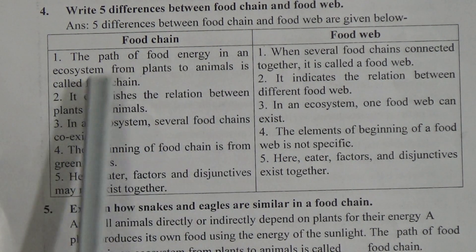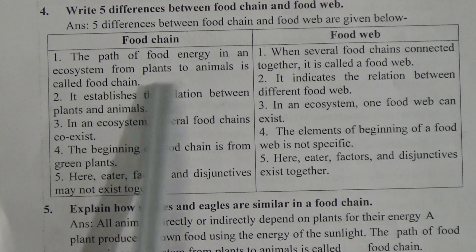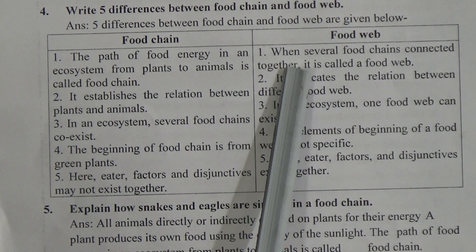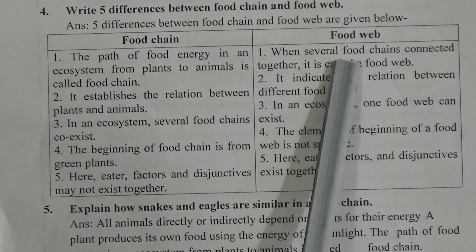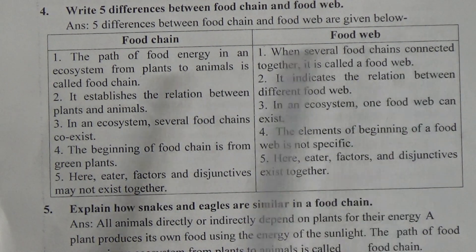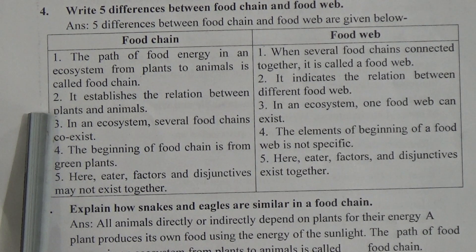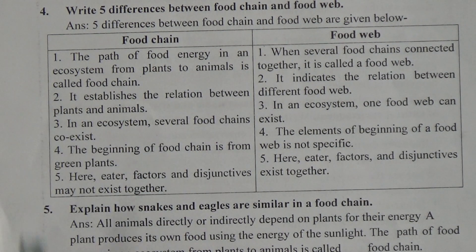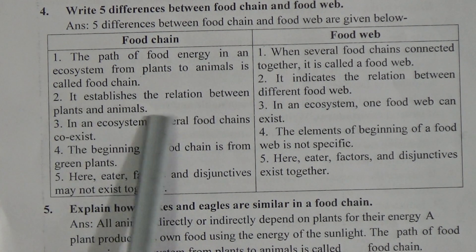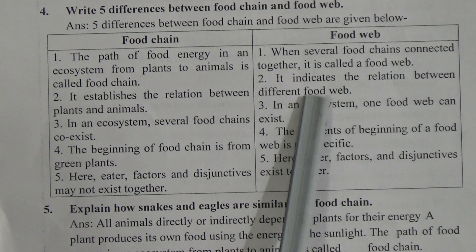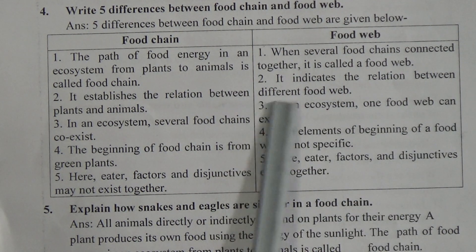Food web: When several food chains are connected together, it is called a food web. Number two — Food chain: It establishes the relation between plants and animals. Food web: It indicates the relation between different food chains.